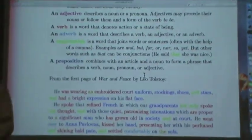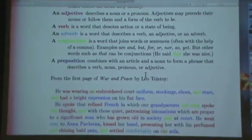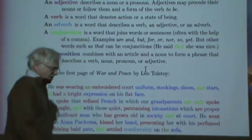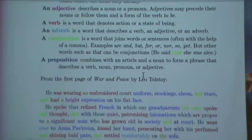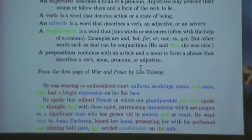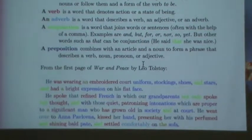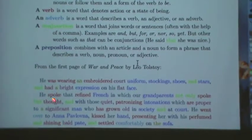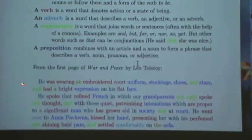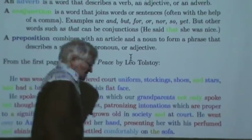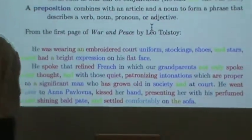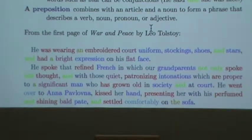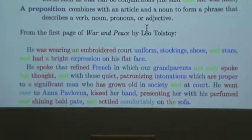I took three sentences from the first page of War and Peace, translated into English. There's a husband-wife team who did the best translation — Pevear is the man's name. What I've done is color-coded all the words in these three sentences according to their parts of speech. Some of it's in French — when Tolstoy wrote, he wrote in French and Russian, and in the Pevear translation the French is still there while the Russian is translated into English.